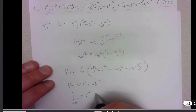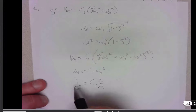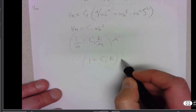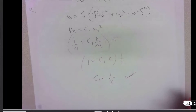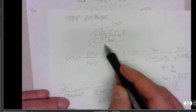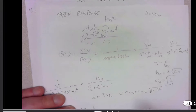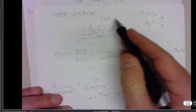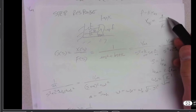Since omega-n squared is k over m, we have c1 times k over m equals 1 over m. Multiplying through by m gives 1 equals c1 times k, and dividing by k gives c1 equals 1 over k. This intuitively makes sense: in a mass-spring-damper system, when everything else dies out, f equals kx, so x steady-state equals f over k.